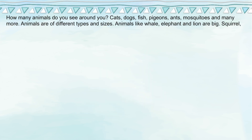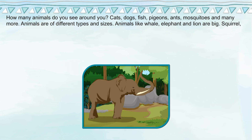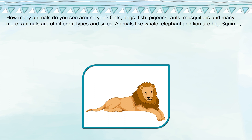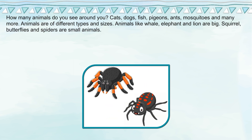Animals are of different types and sizes. Animals like whale, elephant, and lion are big. Squirrel, butterflies, and spiders are small animals.